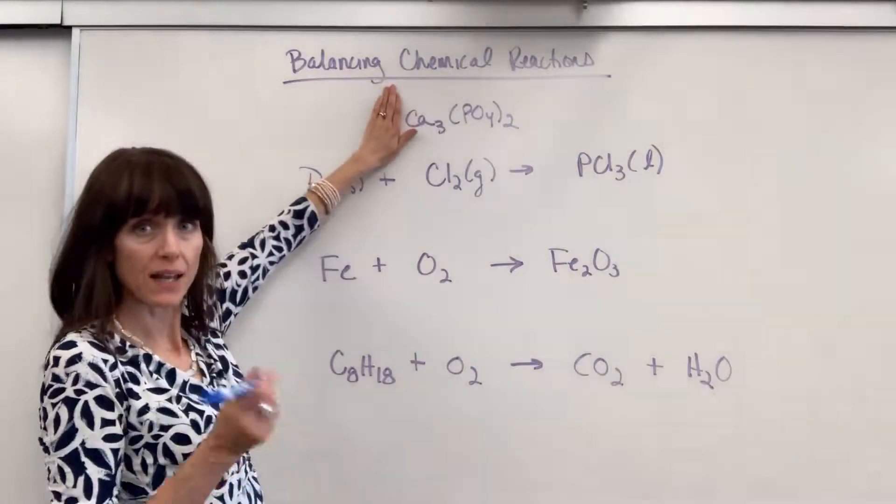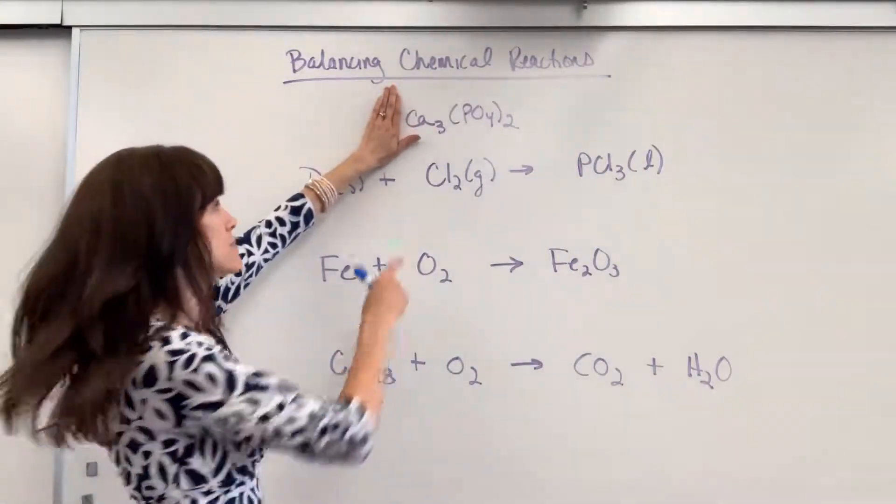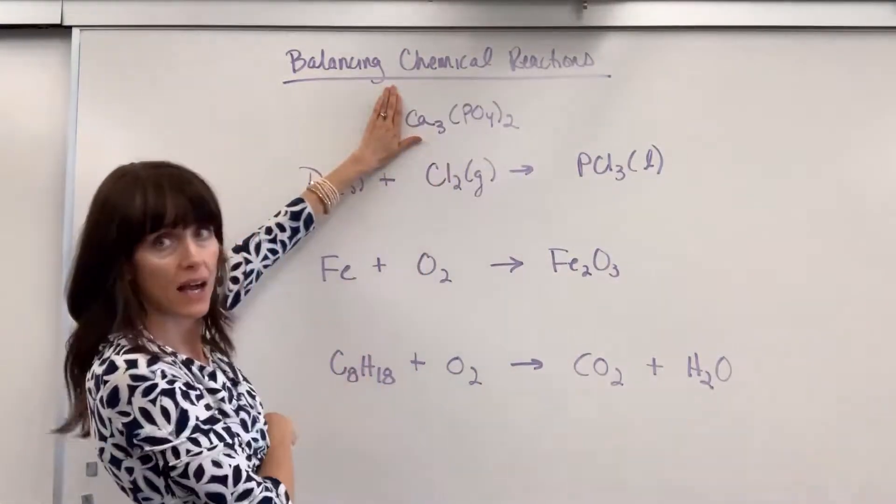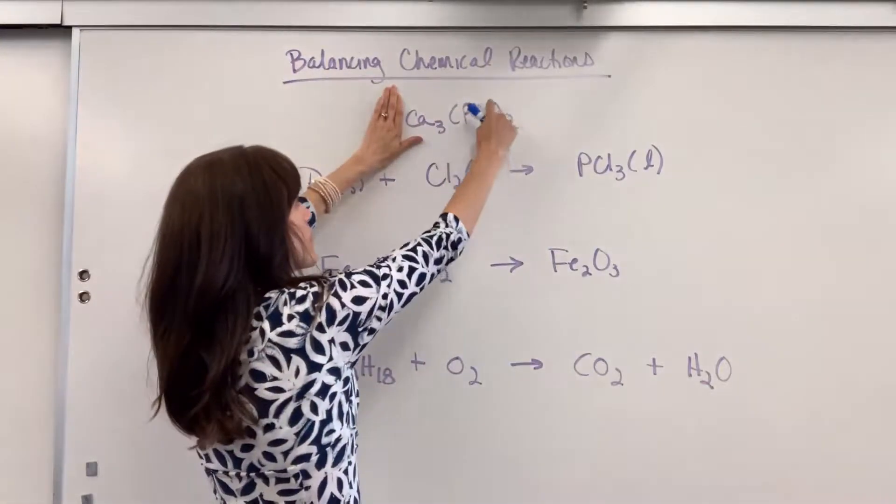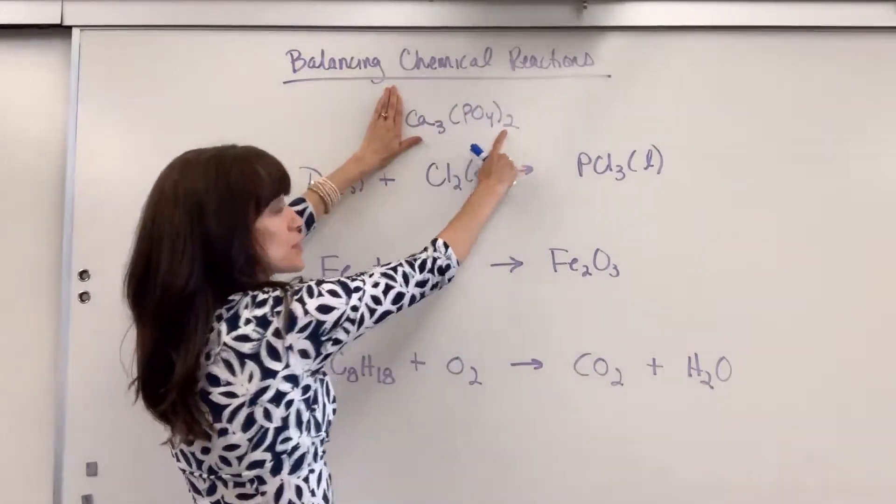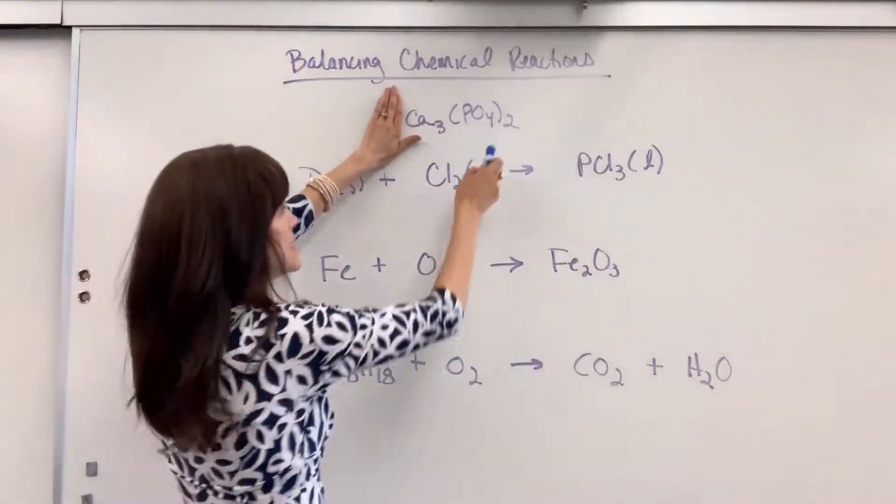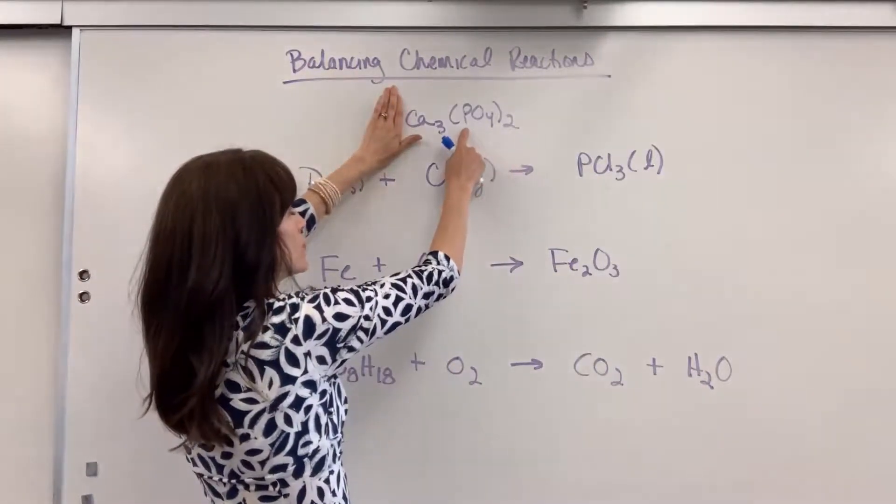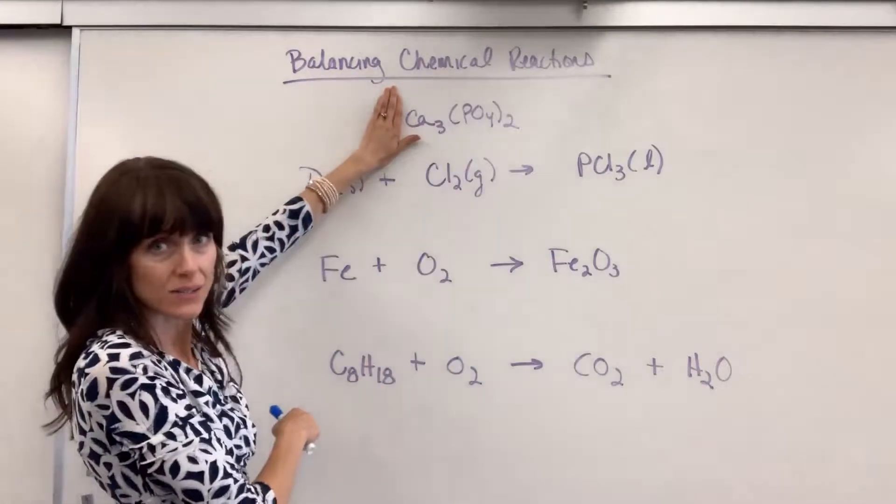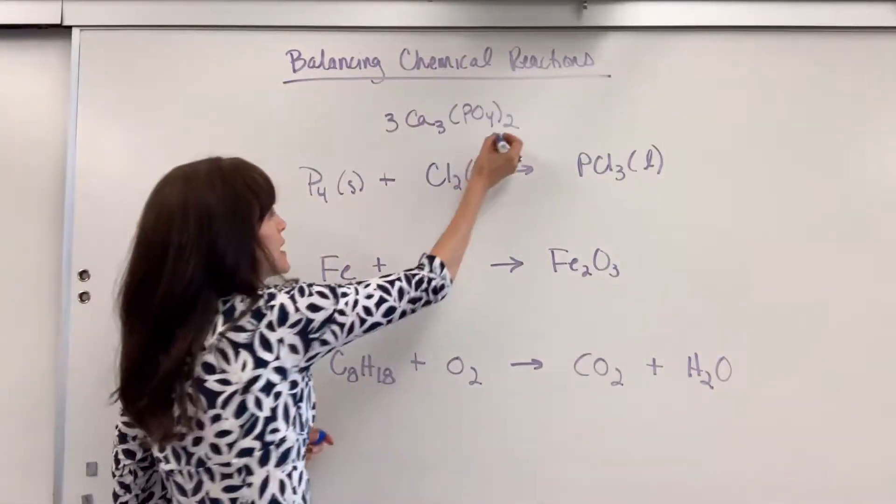Now let's pretend for just a second that that three wasn't there. If I'm counting atoms, I can see I have three calcium. Whenever you have parentheses, the subscript outside of the parentheses distributes. So I have two phosphorus and two times four, eight oxygen. So let's write that down.